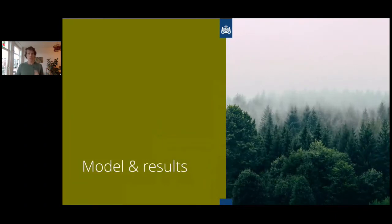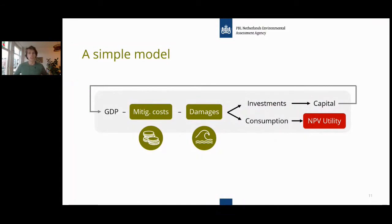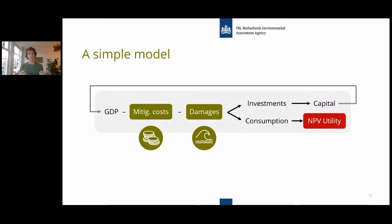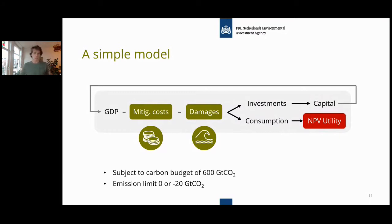For the model, we use a simple version similar to DICE with improvements—including open-source optimization software written in Python, improvements to the climate model, endogenous learning assumptions, and more. At every time step we subtract both mitigation costs and damages from GDP to get the full picture. We fix the carbon budget at 600 gigatons, which brings us to 1.5 degrees, and set an emission limit of either zero (no net negative emissions) or minus 20 gigatons, which is the low end of the current IPCC scenario database.